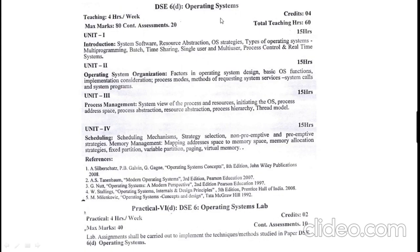The next subject is Operating System. You need to learn four units in OS. The first unit covers introduction to operating systems and their types, along with concepts like multi-programming, batch processing, time-sharing, and multi-user systems. The second unit covers operating system organization. The third unit covers process management. The fourth unit covers scheduling in the operating system. These are the references for Operating System, and the lab assessment shall be carried out for 50 marks.